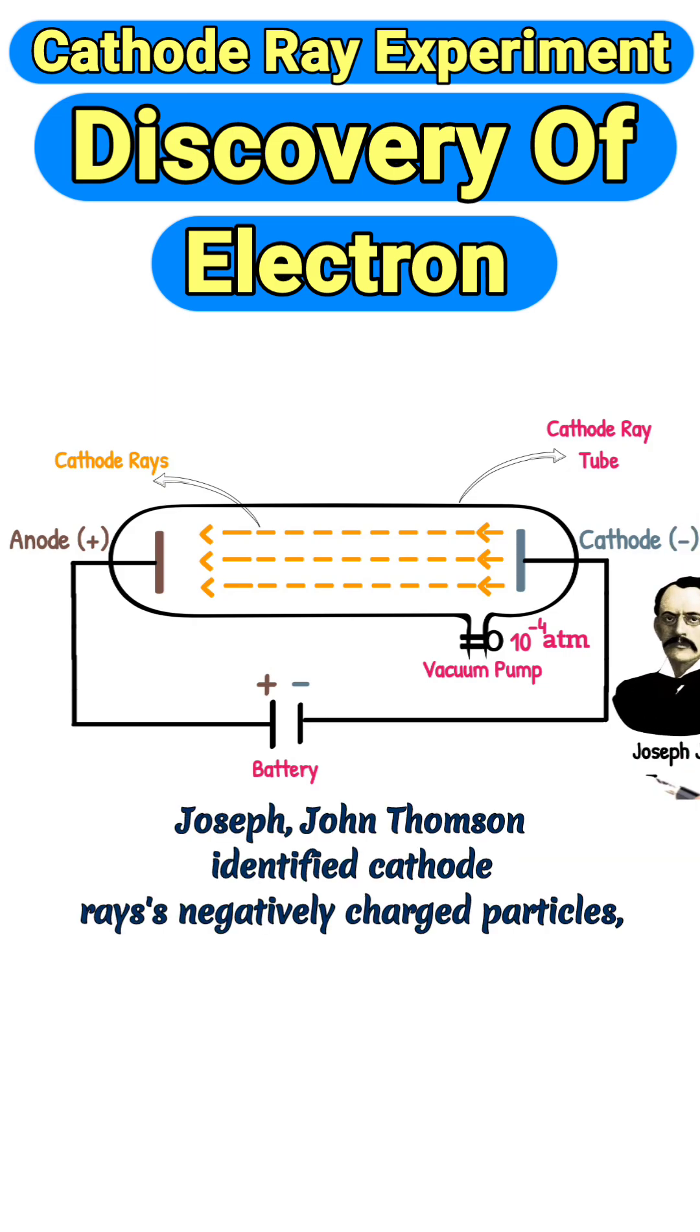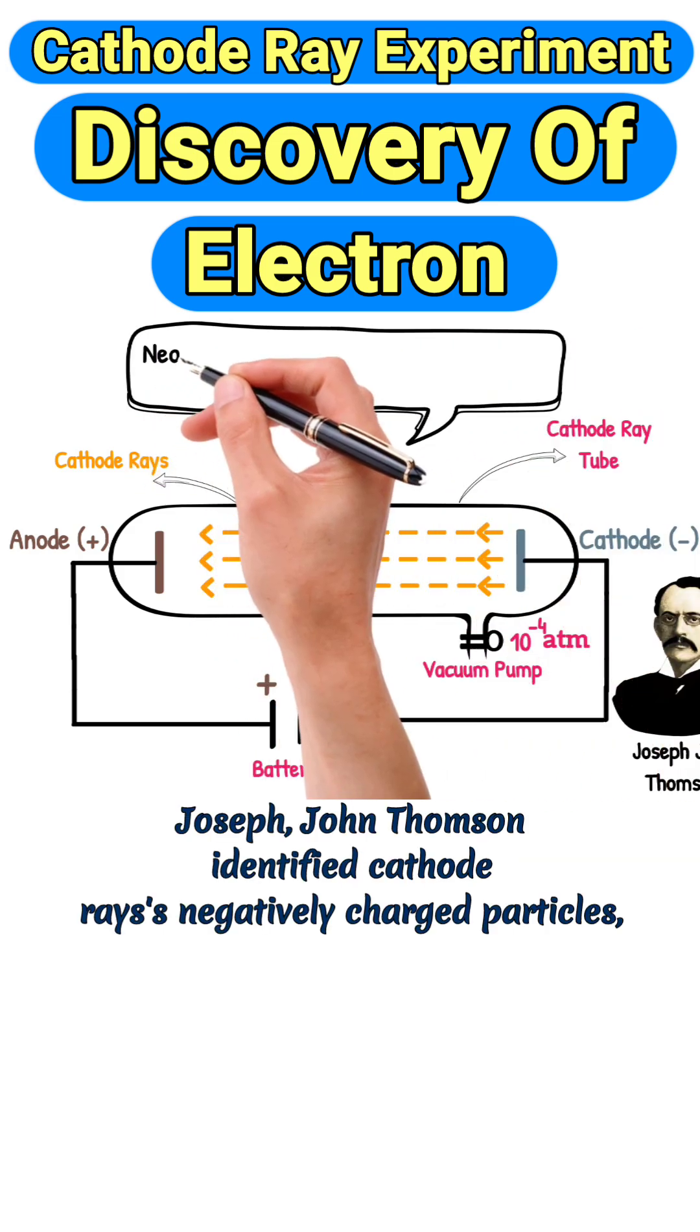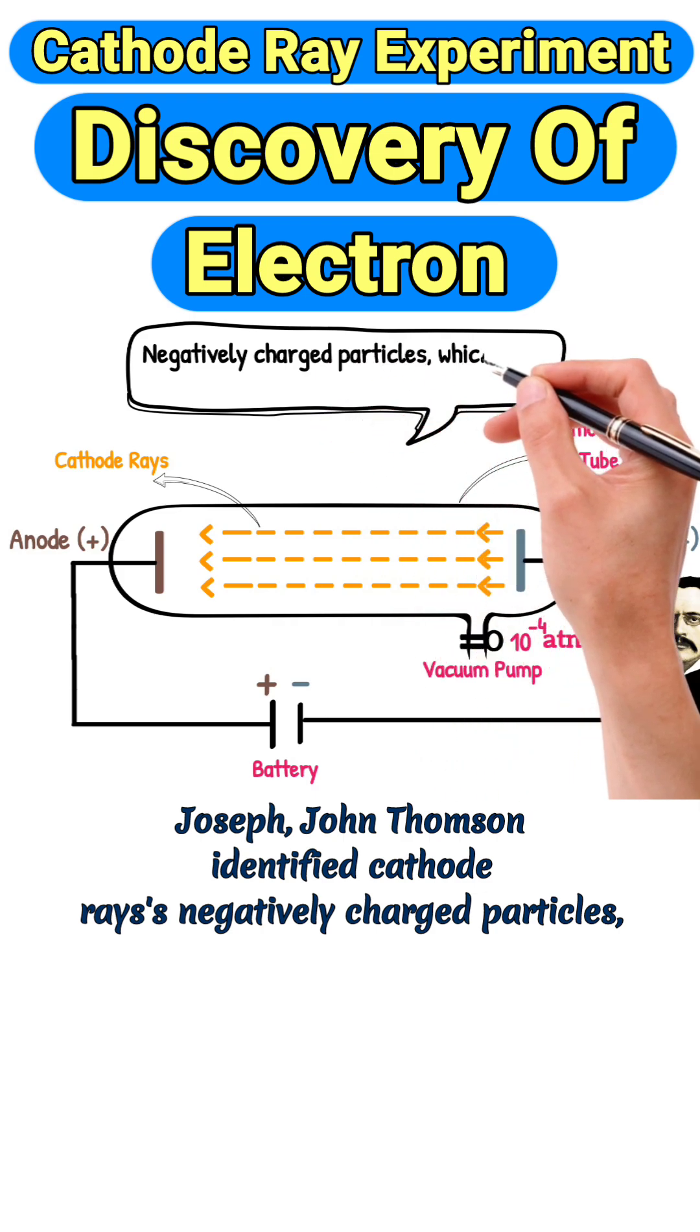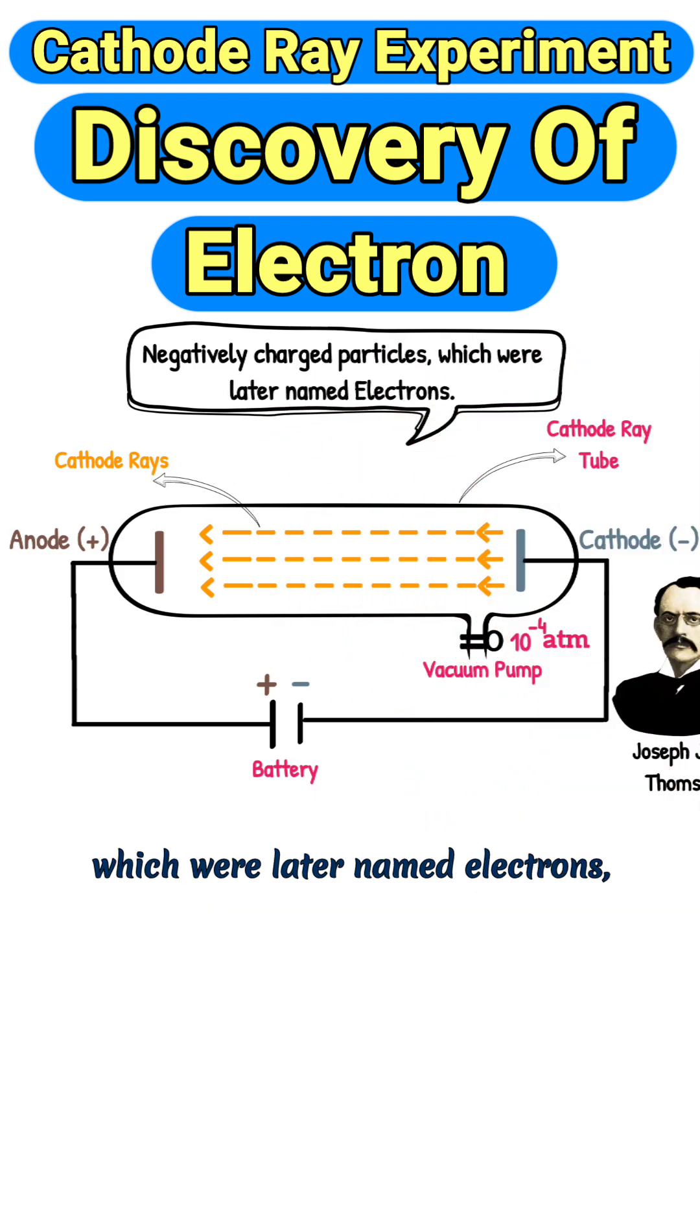In 1897, Joseph John Thomson identified cathode rays as negatively charged particles, which were later named electrons.